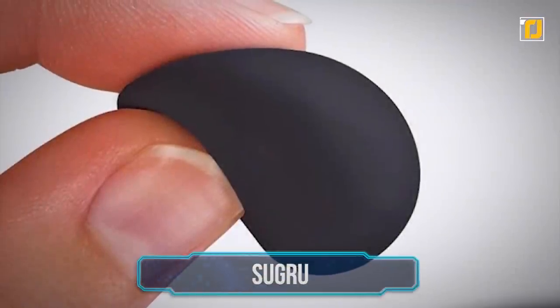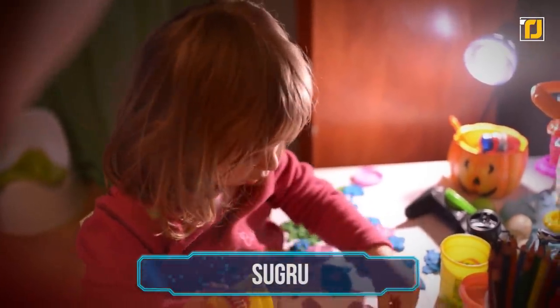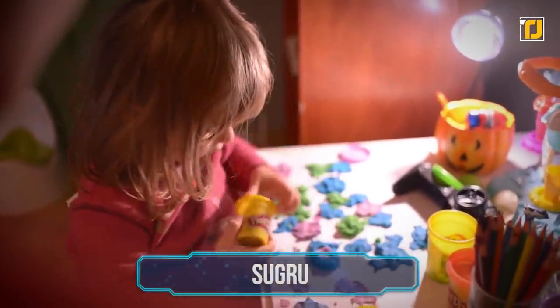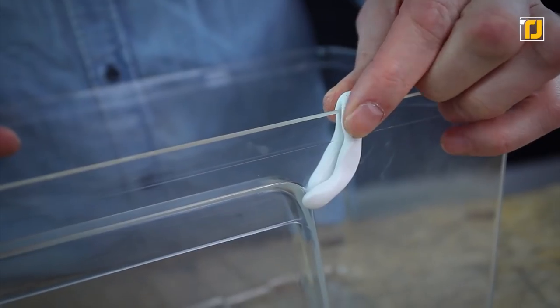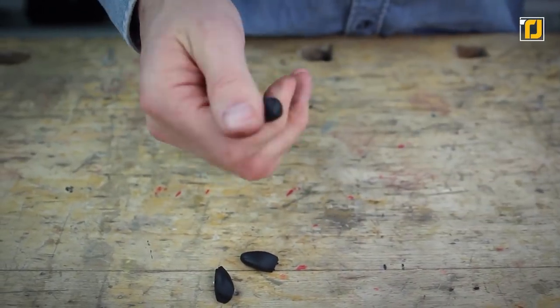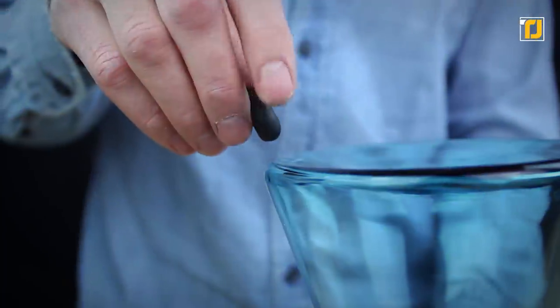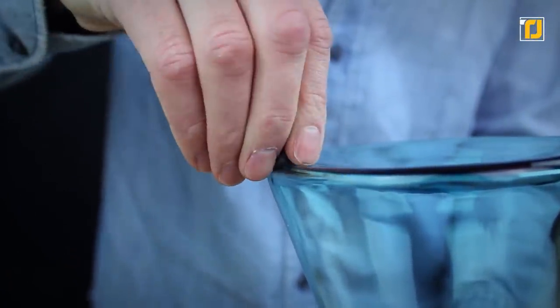Number 10. Sugru. Play-Doh is for kids. But it's so fun to play with. So why isn't there a version for adults? Well, there is now. Sugru is a clay-like glue that you can use to repair and make improvements around your house. It can permanently stick to materials like glass, ceramic, wood, metal, and even plastic.